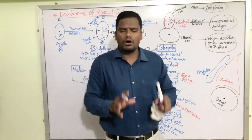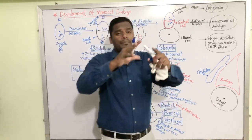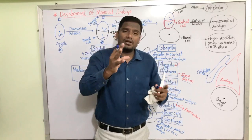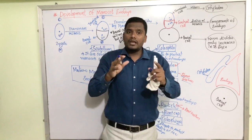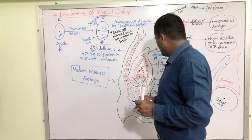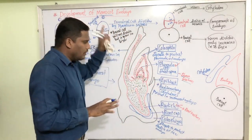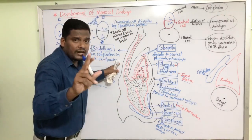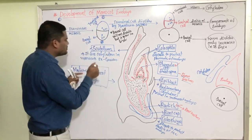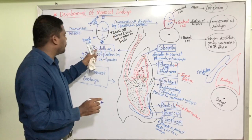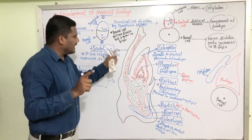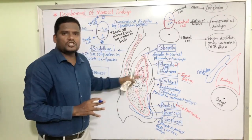To summarize the key definitions: coleoptile is a protective sheath that covers the plumule of the monocot embryo; coleorrhiza is a protective layer that covers the radicle; epiblast is an underdeveloped rudimentary cotyledon; and scutellum is the single cotyledon present in monocots. The diagram is very important for a 5-mark question in your annual examination, and these definitions may appear as 1-mark questions in board and competitive exams.